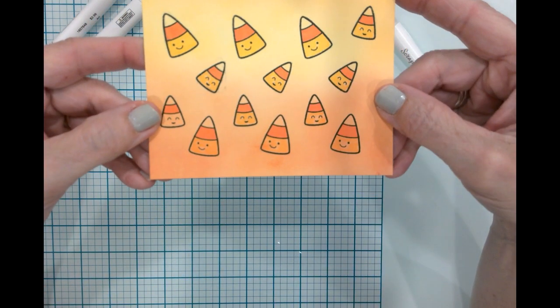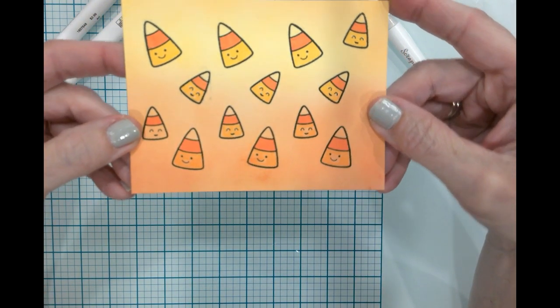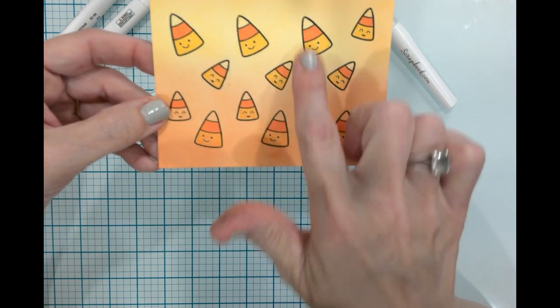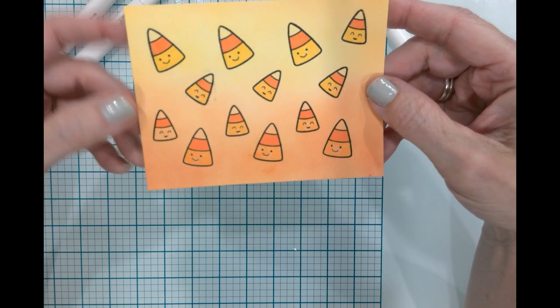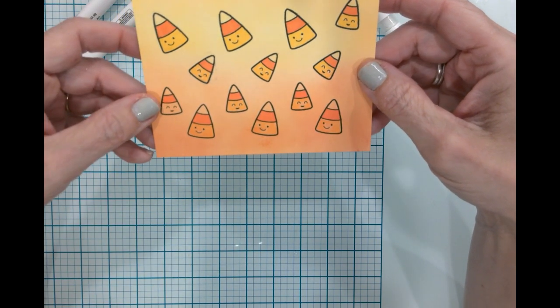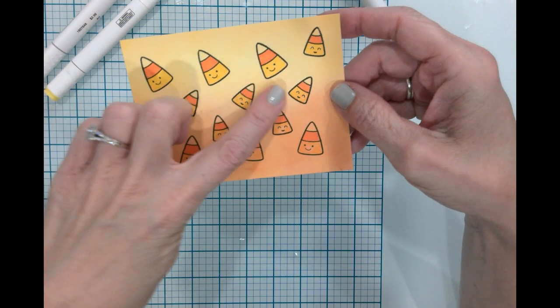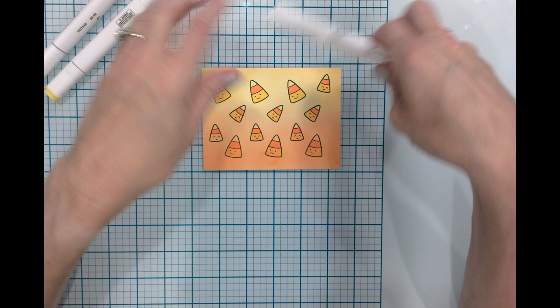There are all my little candy corns colored, and I really think going in with the orange alcohol marker was definitely a good choice. Now I know the yellow on the bottom is a little harder to see, but up here it's very vibrant.